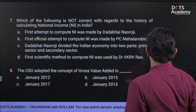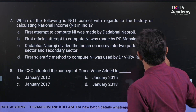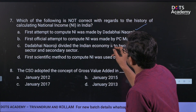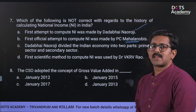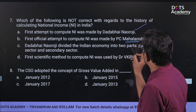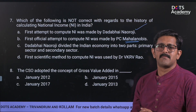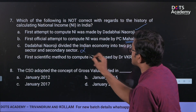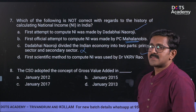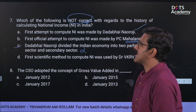Regarding the history of calculating national income in India: the first attempt to compute national income was made by Dadabhai Naoroji — that is a correct statement. Dadabhai Naoroji did not divide the Indian economy into primary and secondary sectors; national income is not calculated that way. The first scientific method to compute national income was used by Dr. V.K.R.V. Rao — that is also a correct statement. Option C is the correct answer.